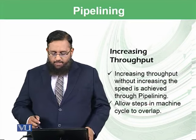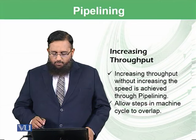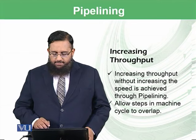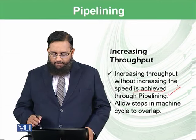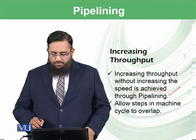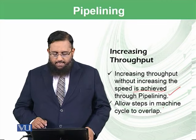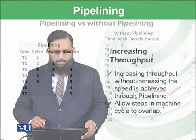Increasing throughput without increasing speed is achieved through pipelining, which allows steps in the machine cycle to overlap.